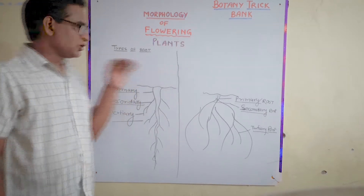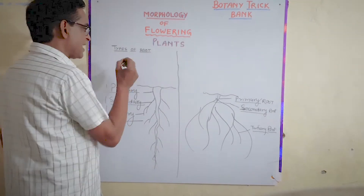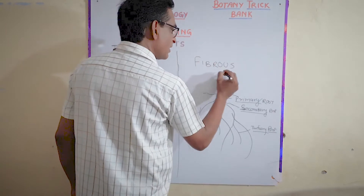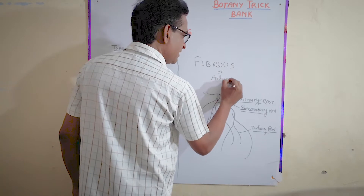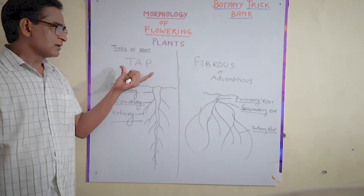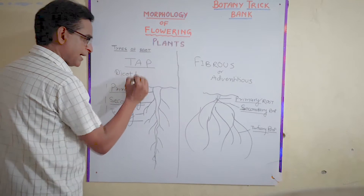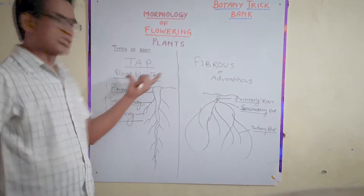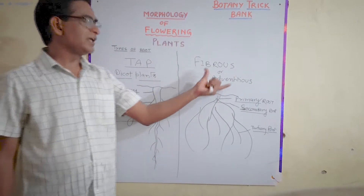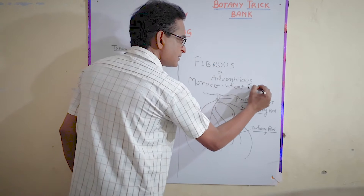For the types of root systems, there are only two types reported. One is called the tap root system and the second is called the fibrous or adventitious root system. These two root systems are characteristic features of different plant groups. The tap root system is basically the feature of dicot plants like Mangifera indica and leguminous plants, while the fibrous root system is represented generally in monocots such as wheat, rice, and maize.